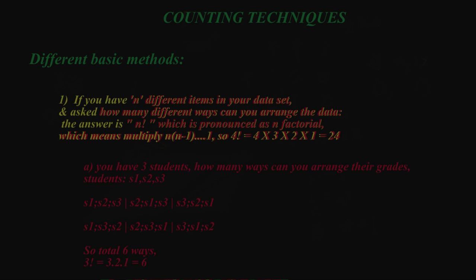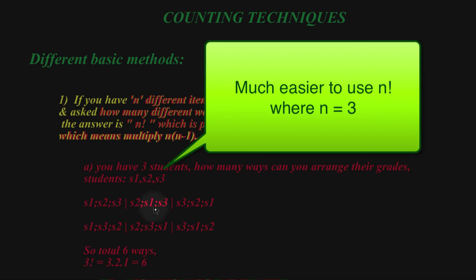If the question were, you have 3 students and you want to know how many different ways you can arrange their grades, here's a mapped out version of your answer. You can either have S1 first, and then it has to be 2 or 3, leaving the other one last. S2 can be first, or S3 can be first. If you go through them that way, that's a long way, you'd get 6.